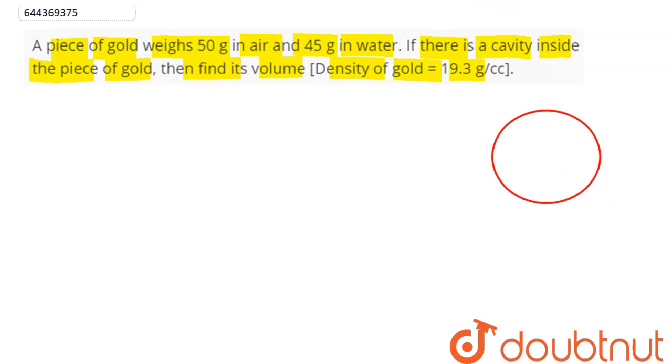So this is our gold and here it says there is a cavity inside. We need to find the volume of this cavity, which is Vc. Suppose the volume in this cavity-free region is V. Hence, the whole portion volume will be V plus Vc.